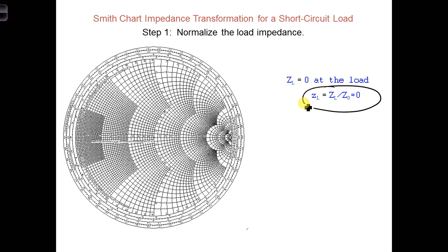Now for step two, we want to plot this value on the Smith chart. In other words, we want to draw a dot representing this load impedance of zero. As a result, the dot should be at the intersection of the RL equals zero circle and the xl equals zero arc.